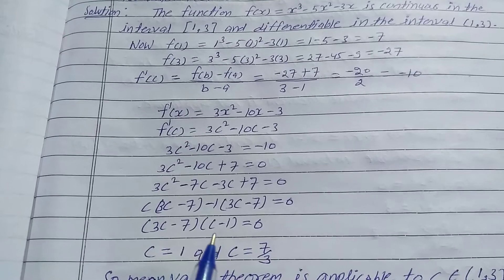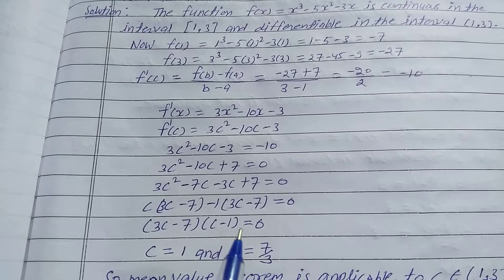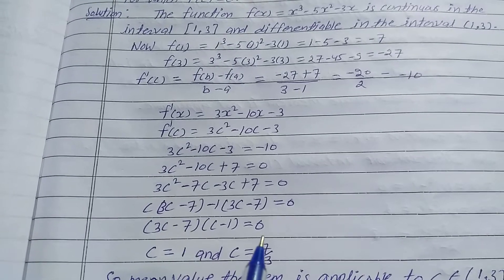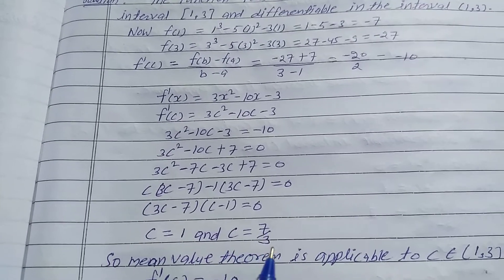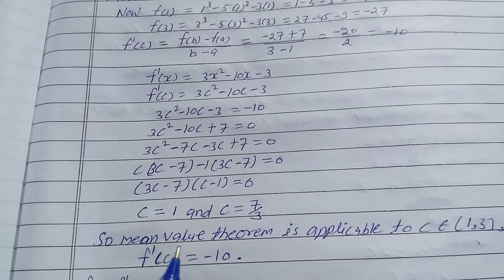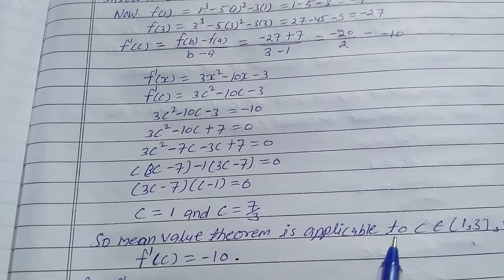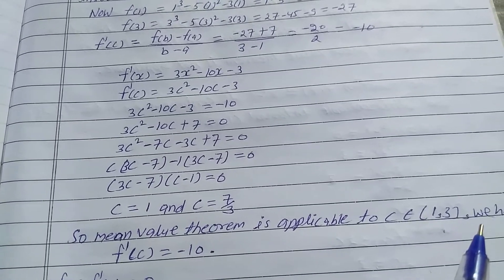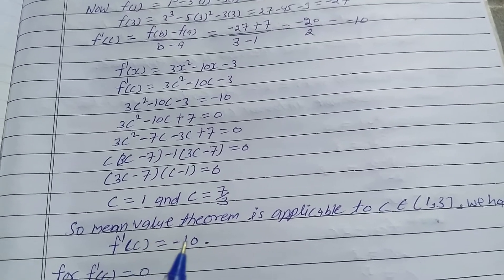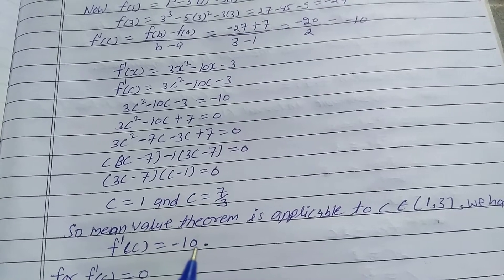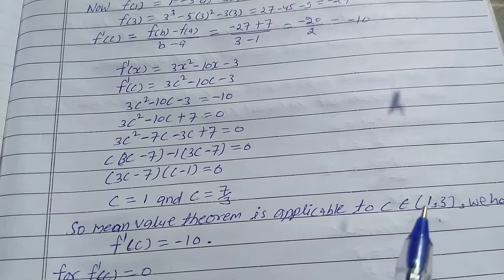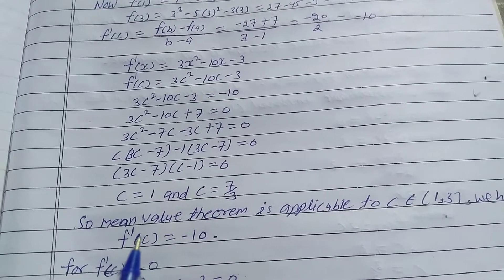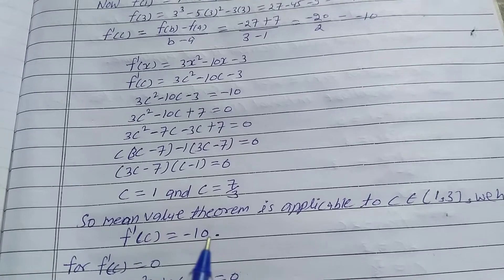So c = 1 and c = 7/3. The Mean Value Theorem is applicable since both values belong to the interval (1, 3), and f'(c) = -10 is verified for c in the open interval (1, 3).